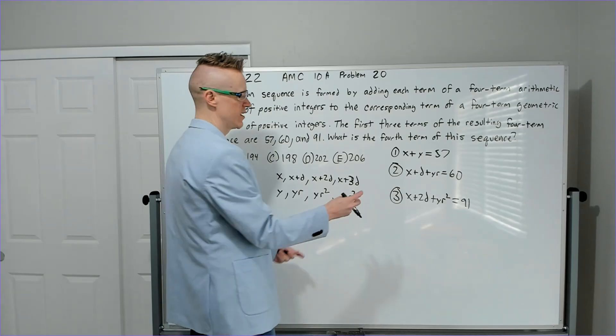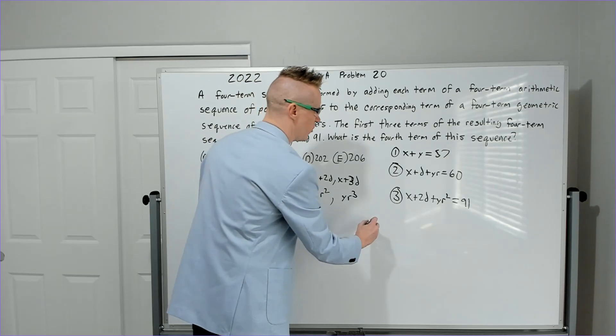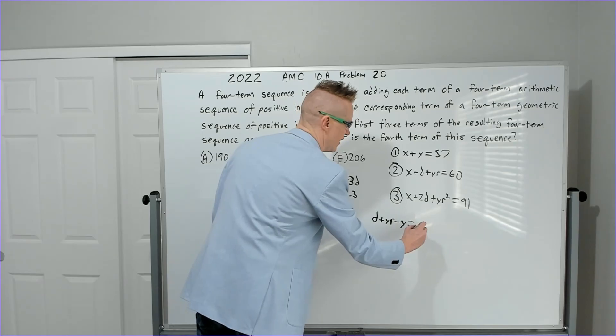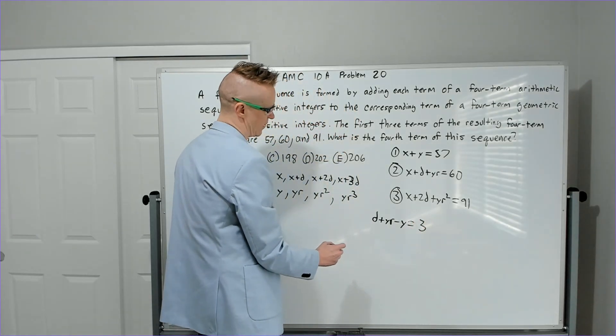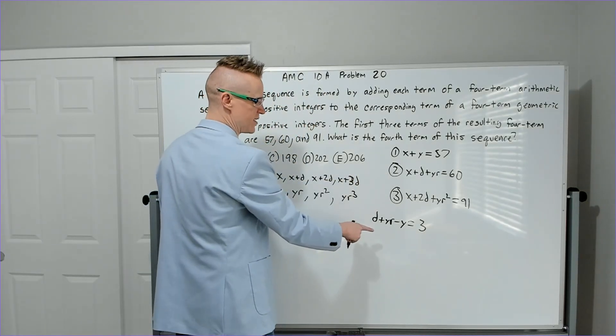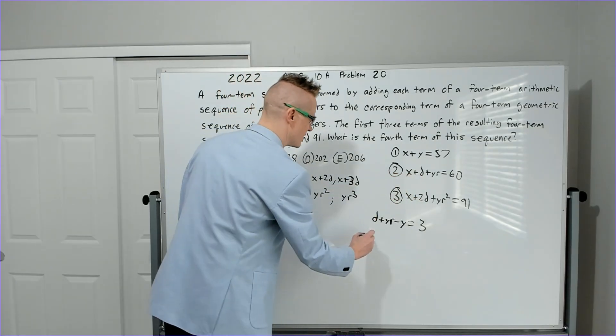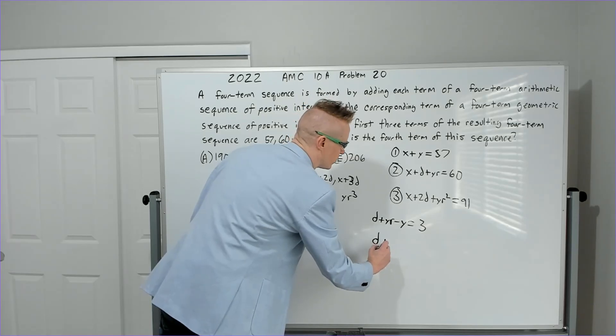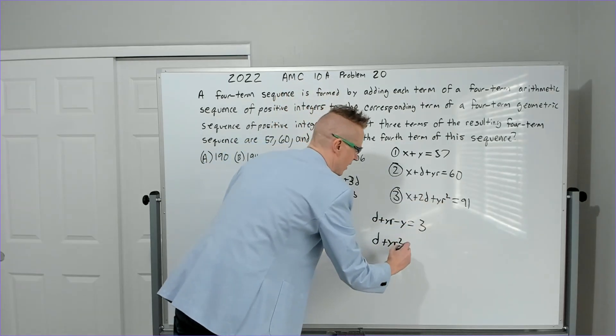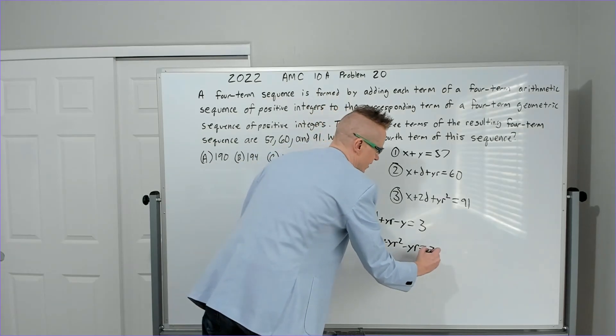So we're just going to try and see what happens. We're going to take equation two and subtract equation one. If we do that, we will get D plus YR minus Y is equal to three. And then I'm going to take equation three and subtract equation two. If I do that, the X's cancel out, 2D minus D is D. I will get D plus YR squared minus YR is equal to 91 minus 60, which is 31.